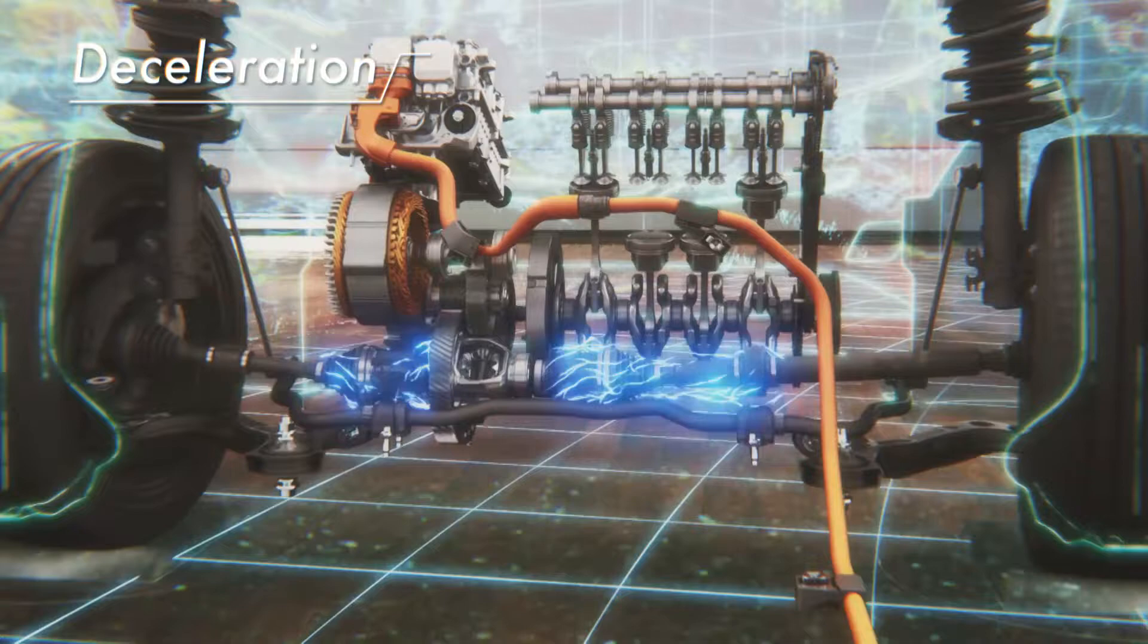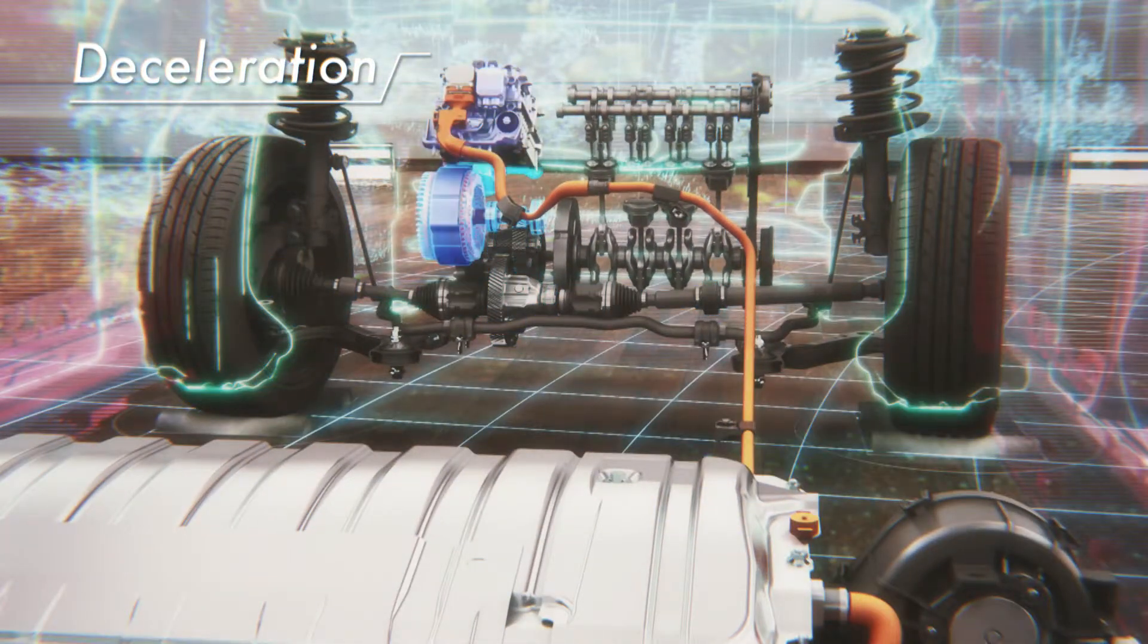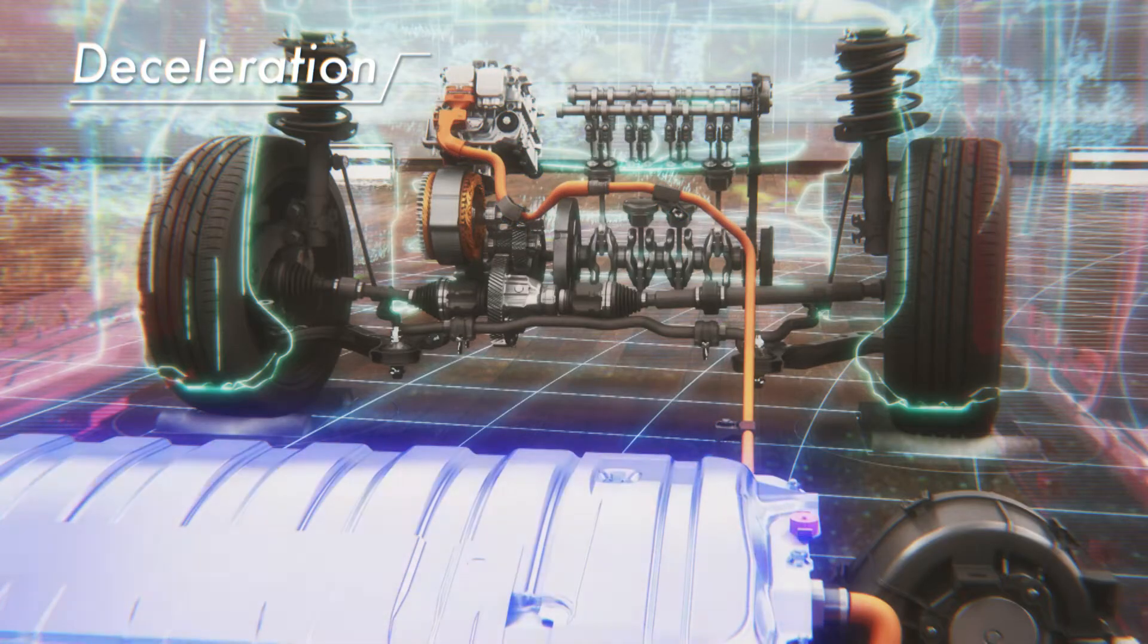The deceleration energy recovered from the tire rotation turns the motor to generate electricity. The electricity is stored in the battery.